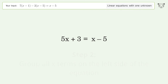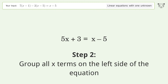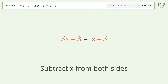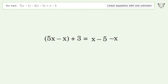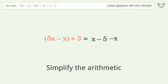Group all x terms on the left side of the equation. Subtract x from both sides. Group like terms. Simplify the arithmetic.